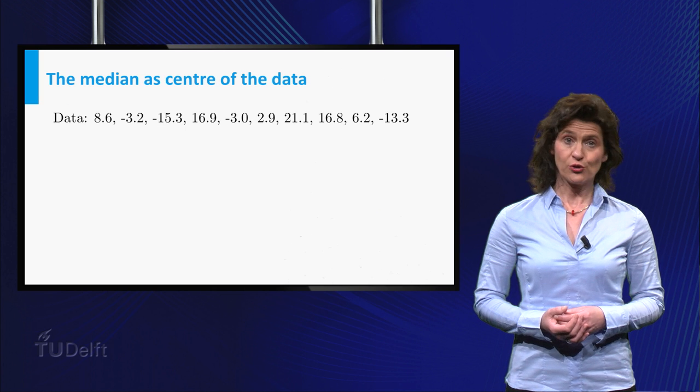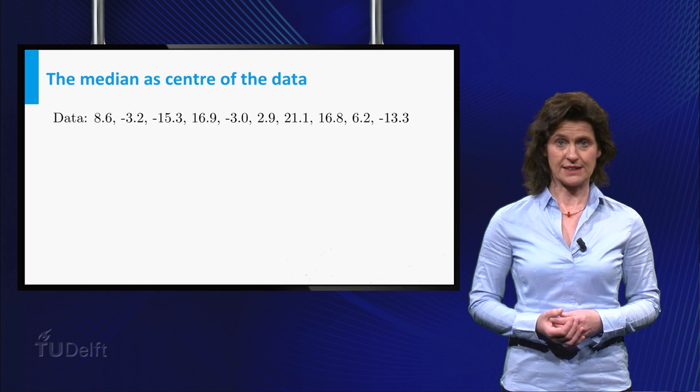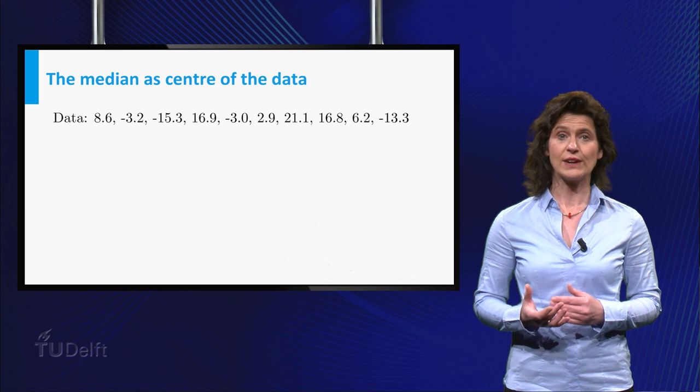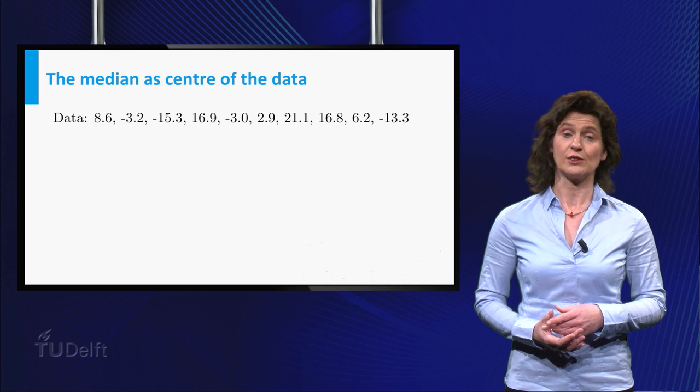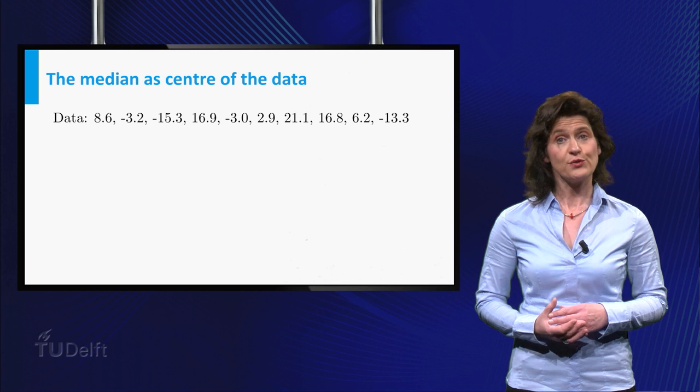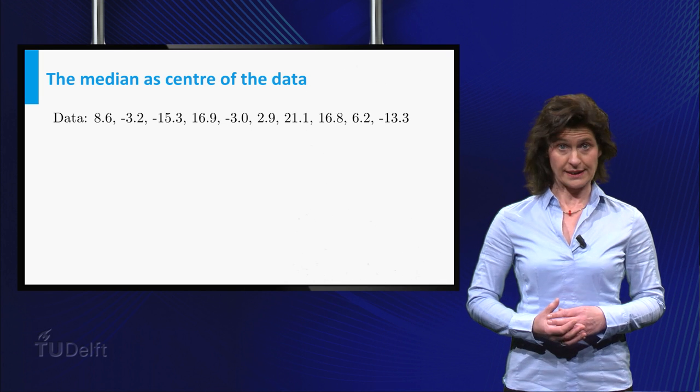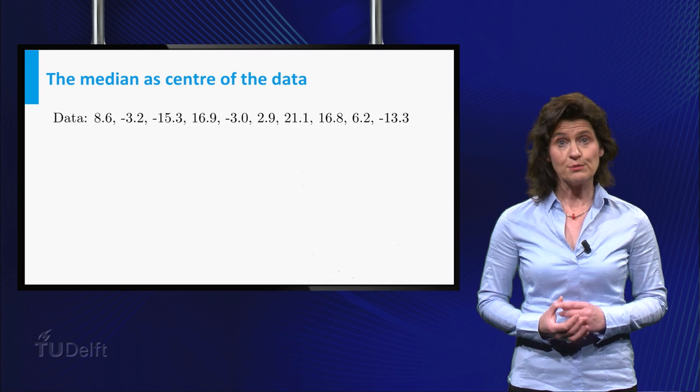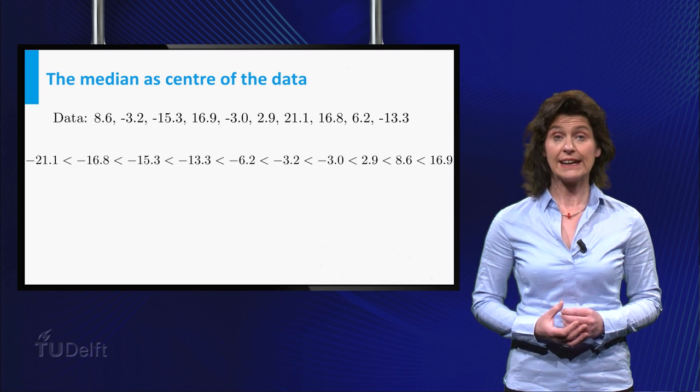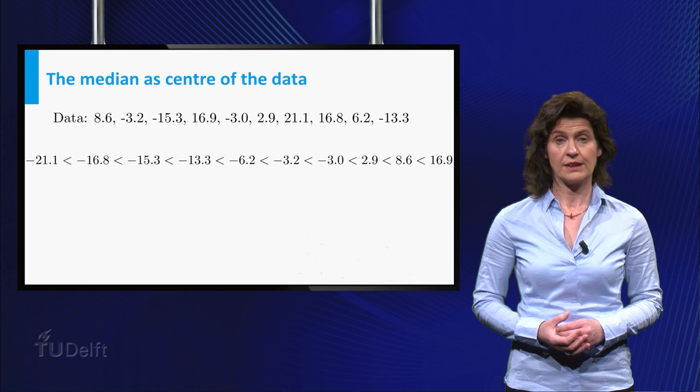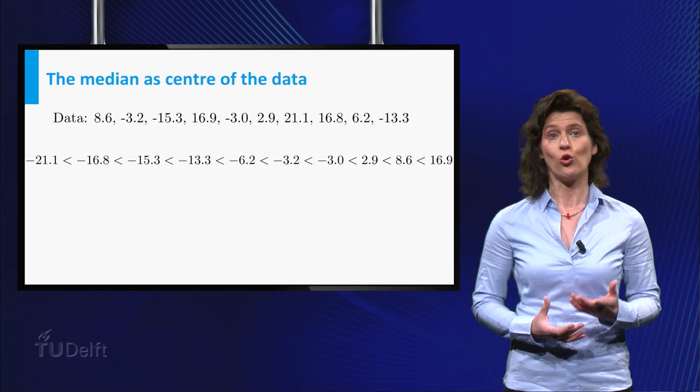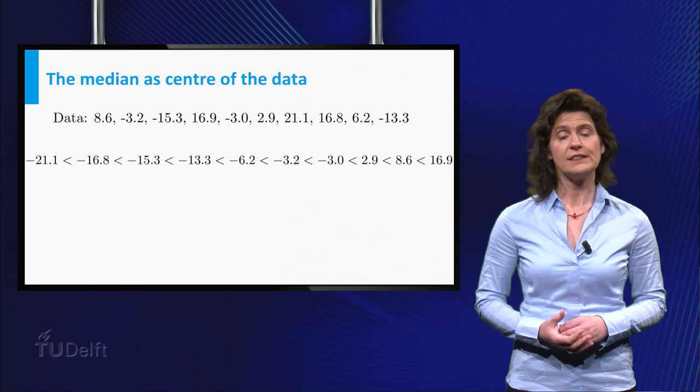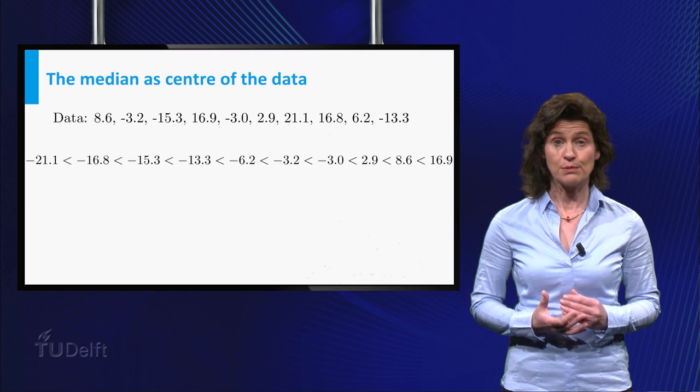The median is an alternative measure of location of a dataset. It is a value that is characterized by the statement that 50 percent of the data points are to the left of this point and 50 percent of the points to the right. To find the median, you first write the data in ascending order. If the number of points in the dataset is odd, and all data points are distinct, the median is uniquely defined as the middle observation.